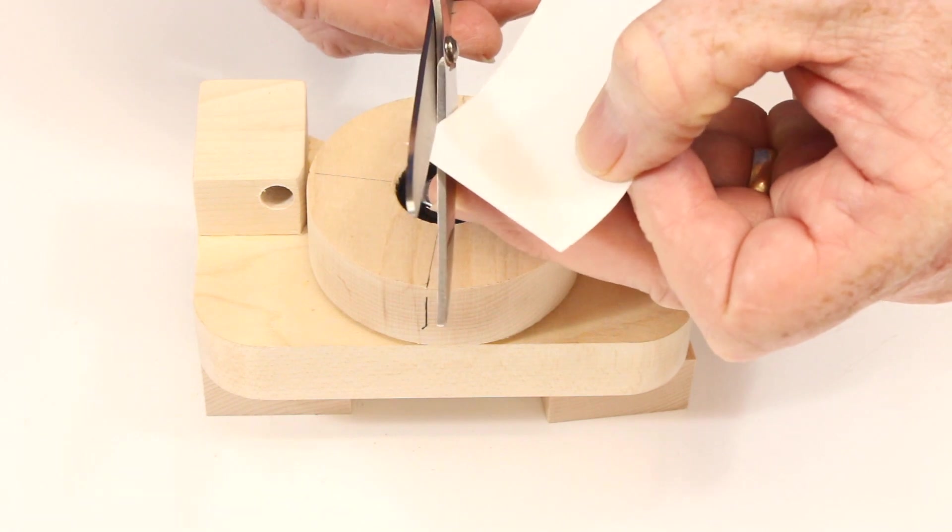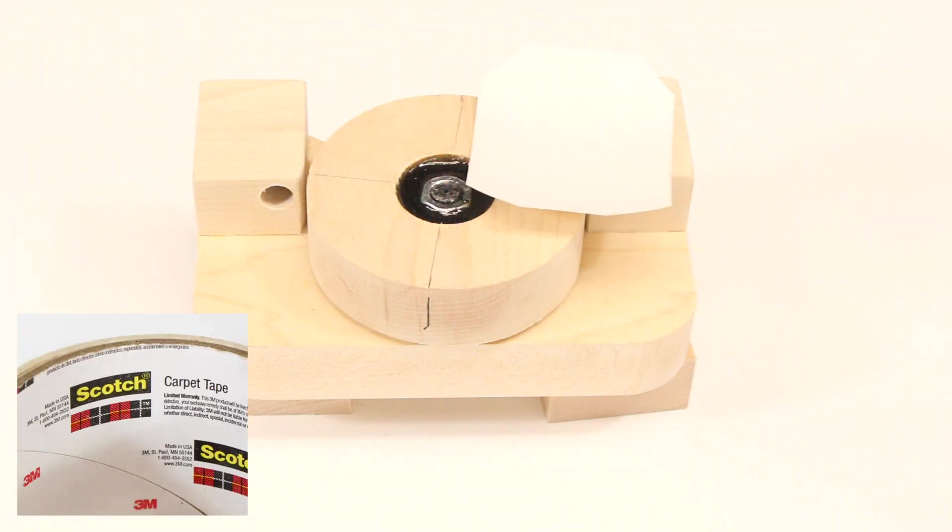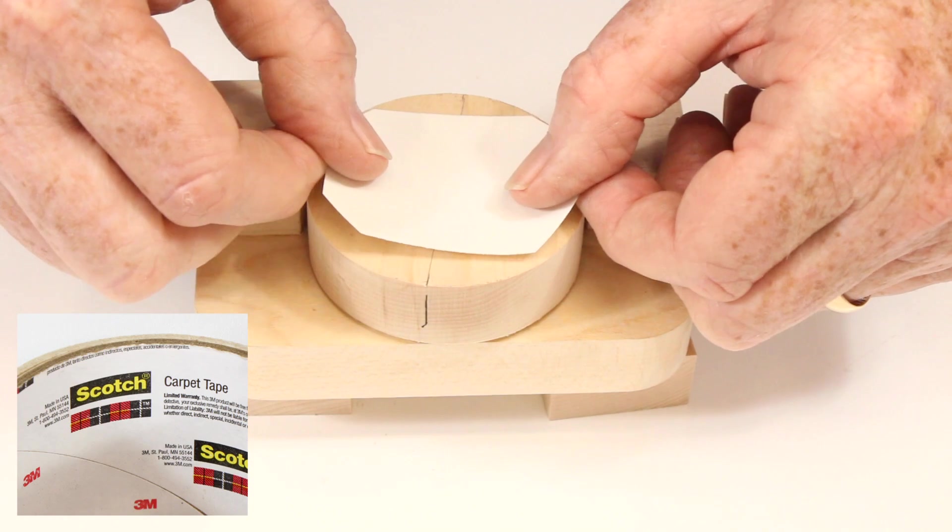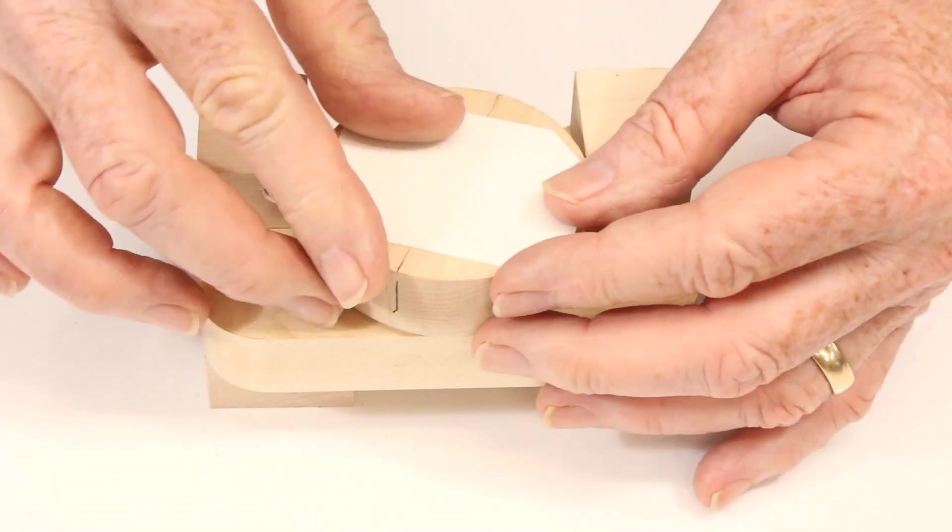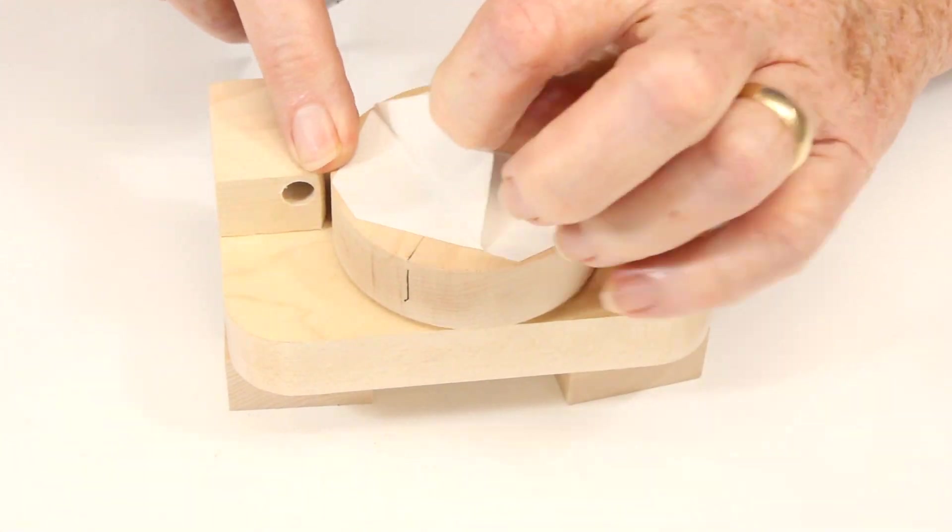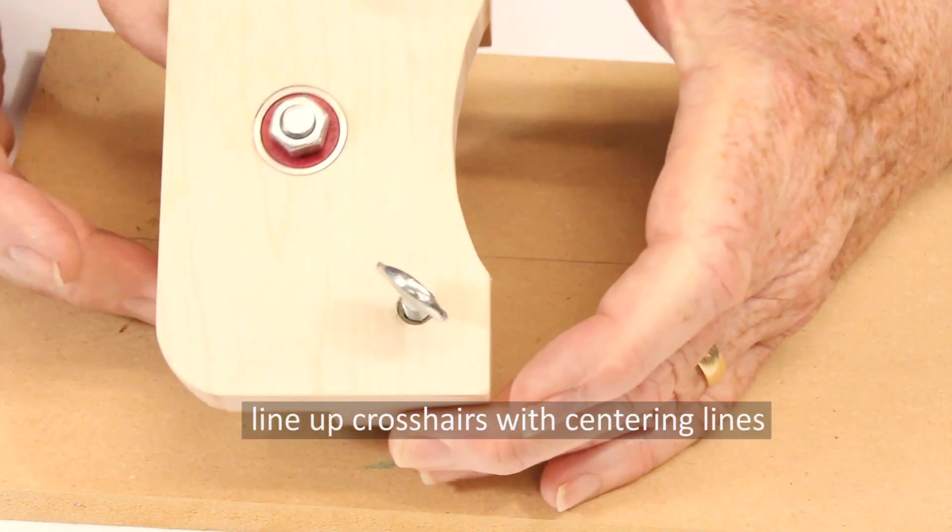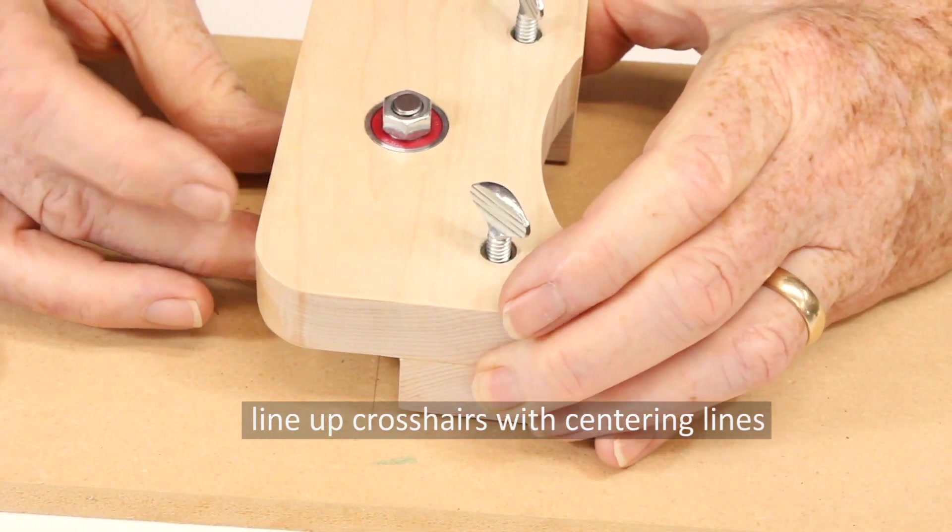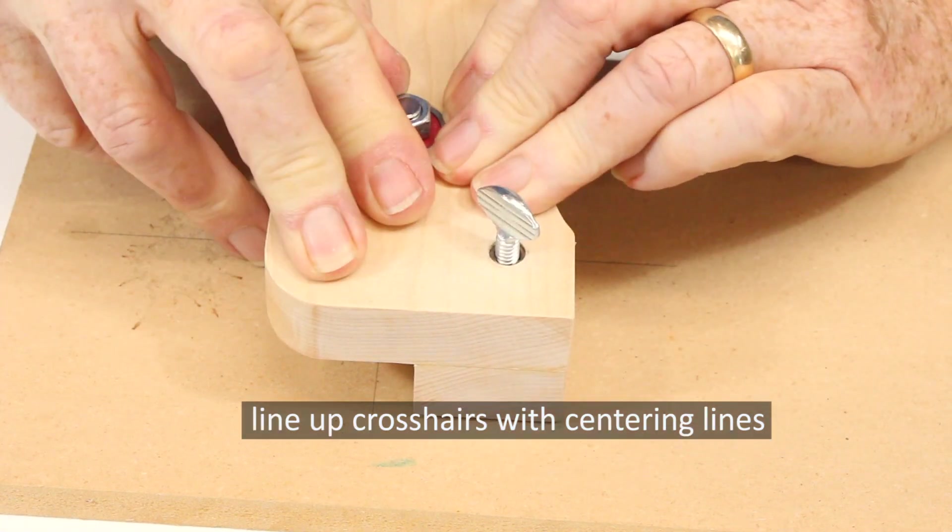To use this jig, apply a piece of double-sided carpet tape to the bottom of the wheel. The work surface needs to be smooth, clean, and free of sawdust. Press the jig down firmly for several seconds to adhere the tape.